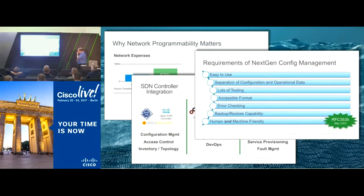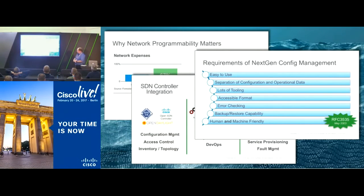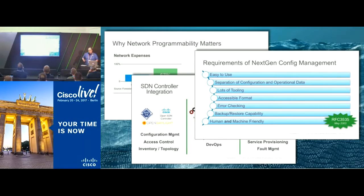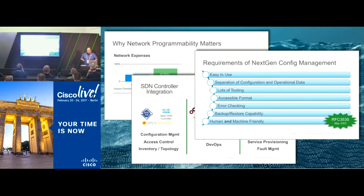About 14 years ago, the industry came together and started defining the requirements for what they thought of as next-gen config management. They talked about ease of use, the separation of config and operational data, and the availability of tooling for customers and software vendors to get to grips with data models and configuring the network. The formats used to talk to the network needed to be accessible with lots of tooling available.